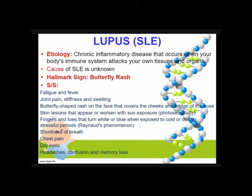Lupus is a chronic autoimmune disease in which the body's immune system becomes hyperactive to attack normal healthy tissues. The main problem with lupus is that the body cannot differentiate antigen from normal tissues, so this antigen attacks our own body.